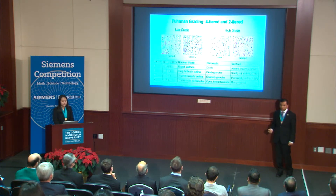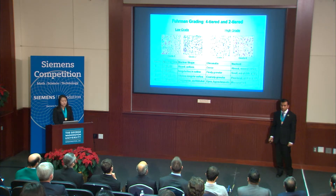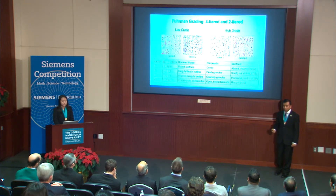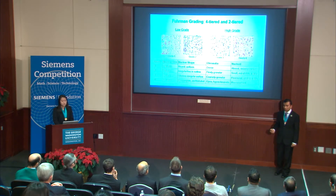When assessing Furman grade, pathologists look at four nuclear characteristics: size, shape, density of chromatin, and prominence of nucleoli. Cells from higher grade tumors have nuclei that are larger, are more irregular in shape, have coarser chromatin, and have more prominent nucleoli.